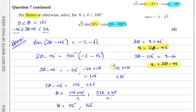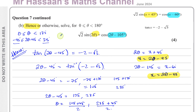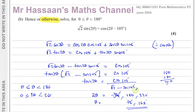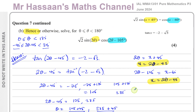Generally the hence method is easier — you have to spot the relationship between the equations. The otherwise method is very similar to what we did in part A of the question. That completes question number 7 from the June 2024 International A-Level Pure Mathematics P3 paper. Other questions from this paper and from the topic of trig identities and equations can be found in the playlists. You can subscribe to the channel and see you soon.